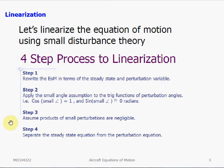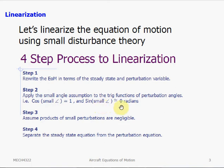Here I list down four steps in the process of linearizing an equation. Step one: we write the equation of motion in terms of the steady state plus the perturbed variable. Step two: we apply the small angle assumption, which means the cosine of the small angle is approximately one, and the sine of the small angle is approximately zero radians. Step three: we assume the products of small perturbations are negligible, so they are zero. And step four: we separate the steady state equation from the perturbed equation. This gives the linearized aircraft equation of motion in the perturbed mode.